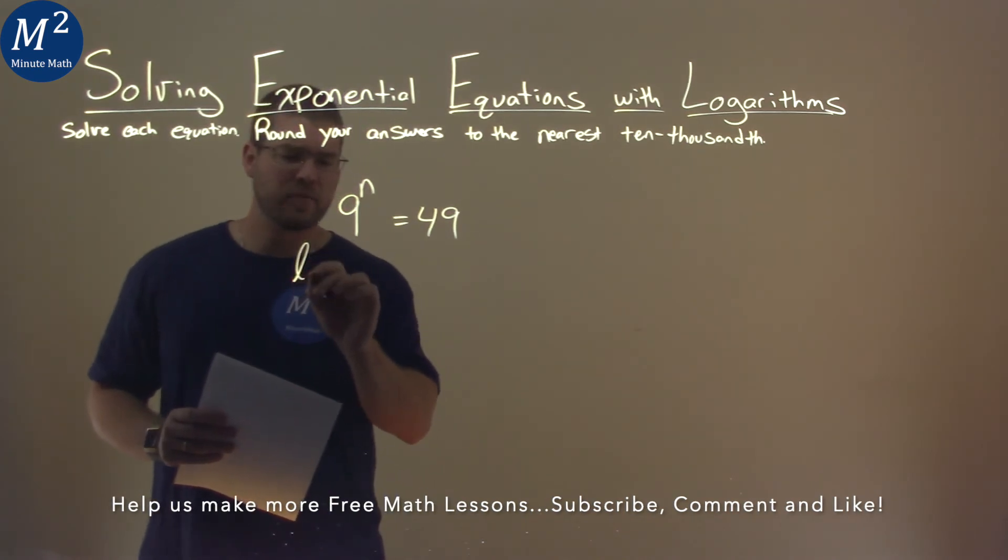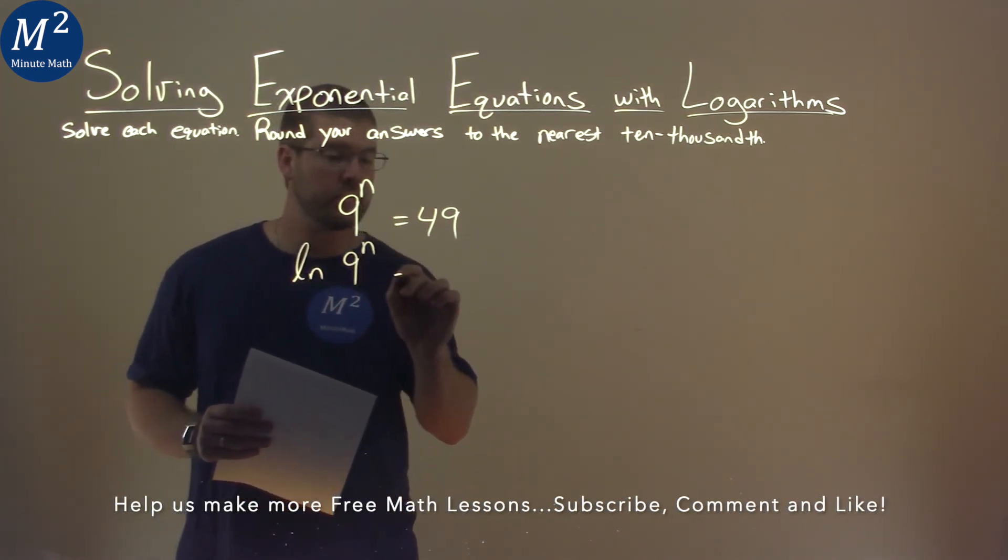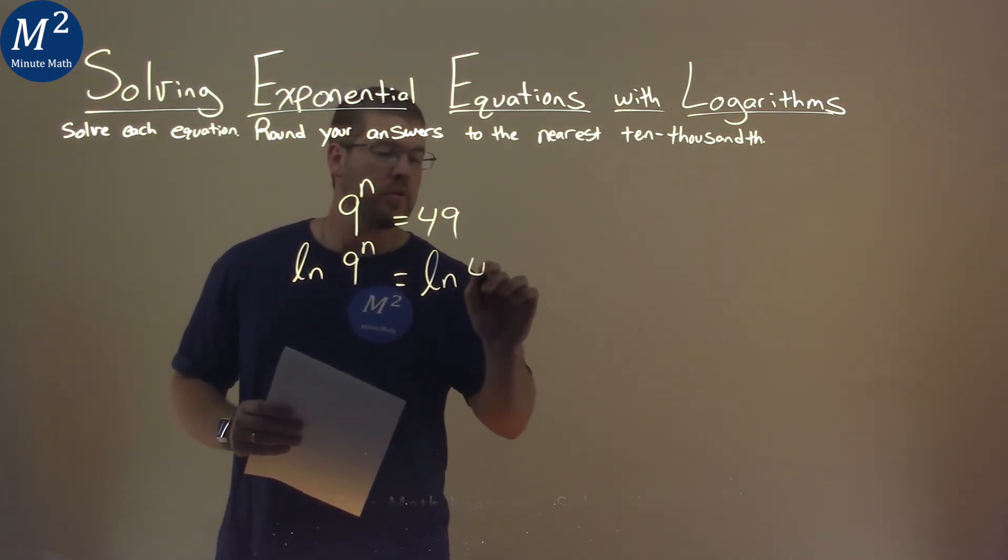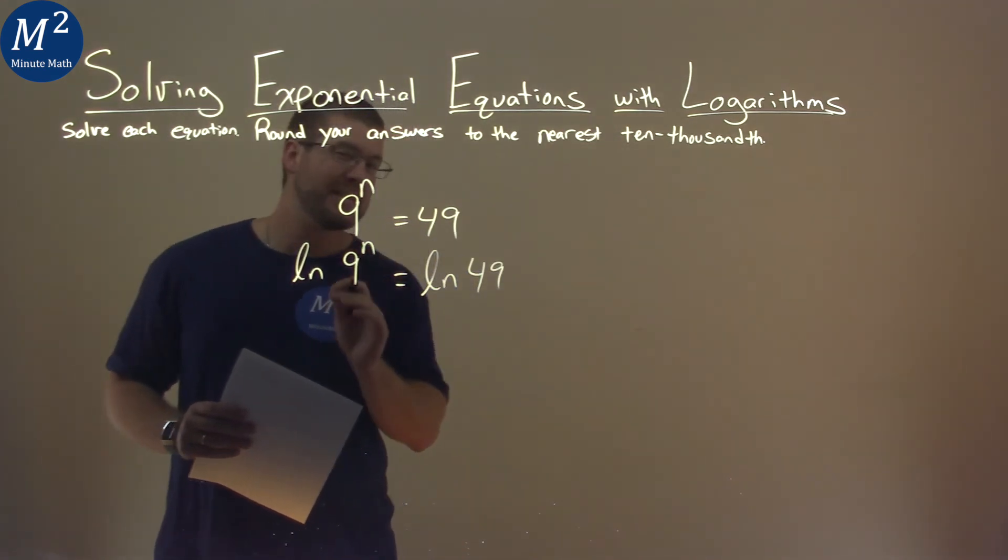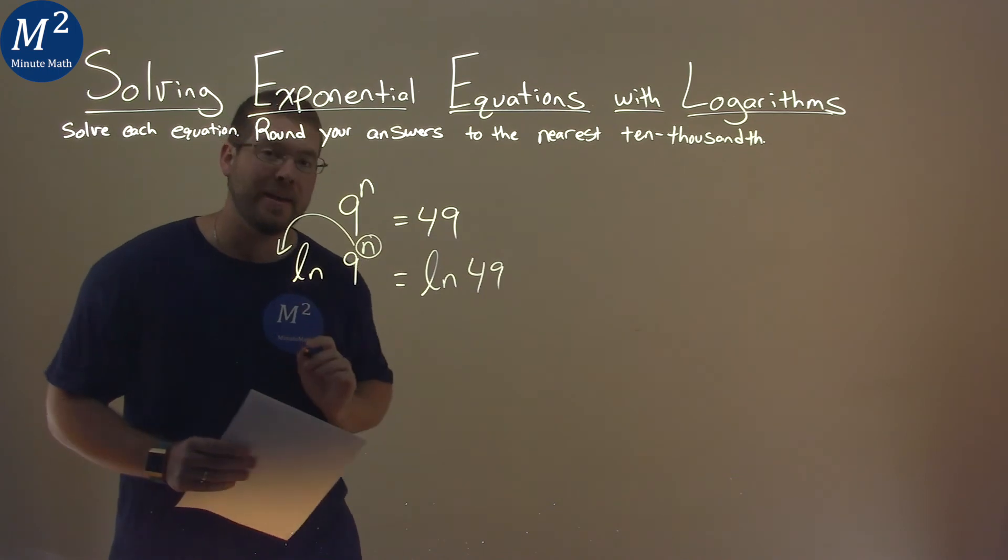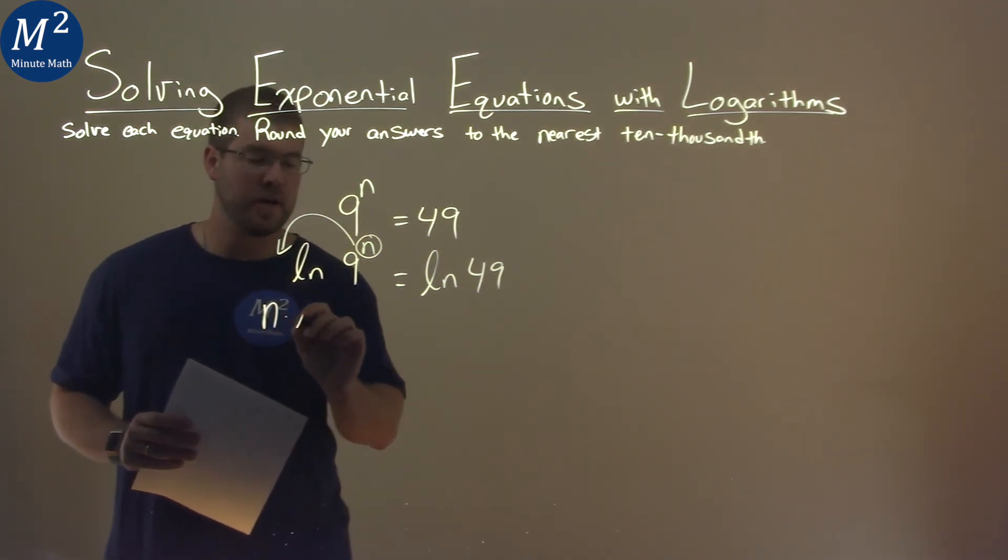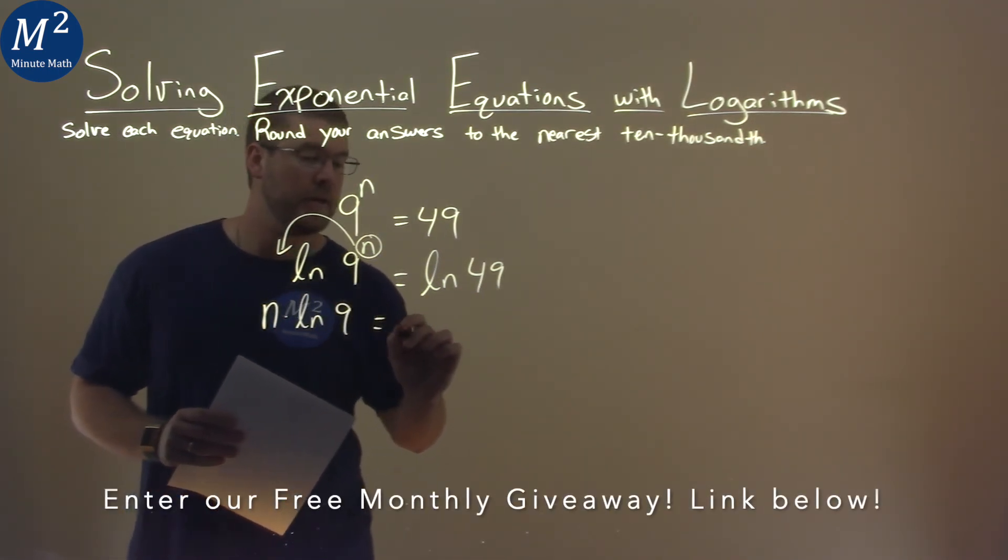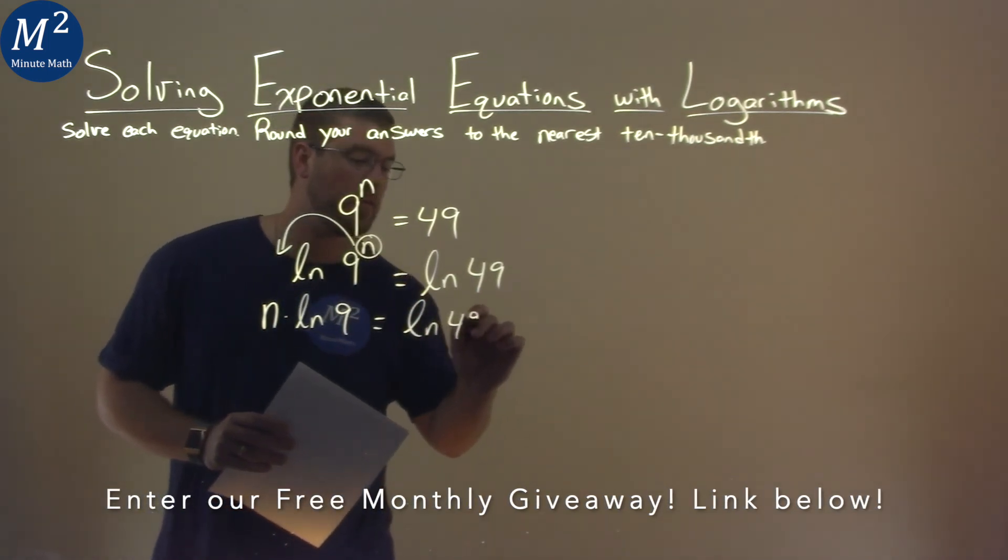If I take the natural log of both sides, certain rules apply here. This allows us to take this exponent of n and put it in front there with multiplication. So we have n times the natural log of 9 now is equal to natural log of 49.